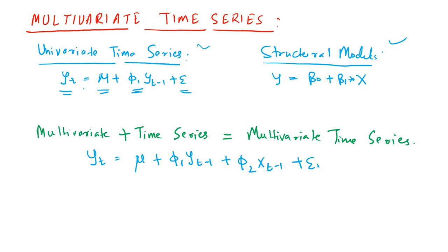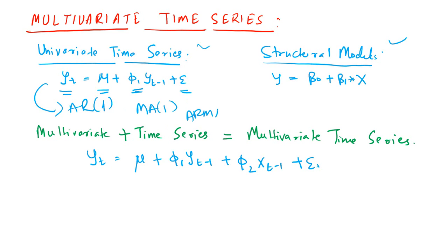y_t is the stationary time series — it is a linear combination of its past values y_{t-1}, y_{t-2}, and so on. This is basically an AR(1) model. We can also have an AR(2) model by including more lags — AR(2), AR(3), and so on. We can also include error terms, thereby including the moving average terms. So we can have an MA model and we can combine these models to form ARMA-type models.